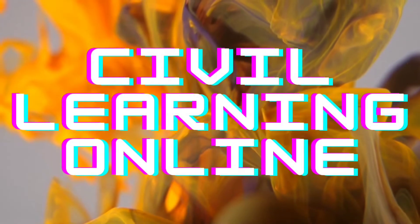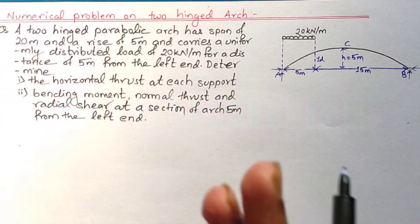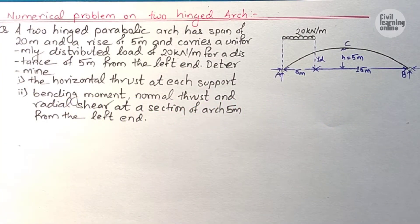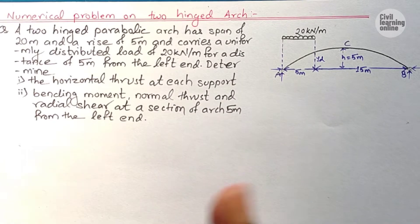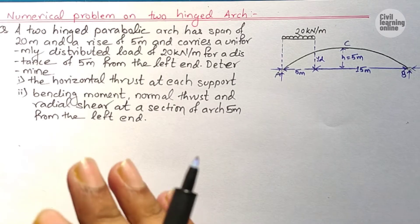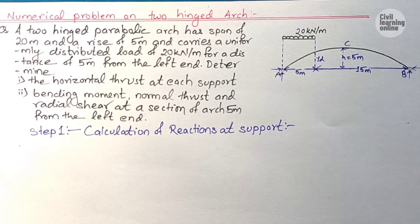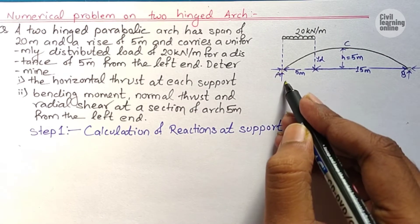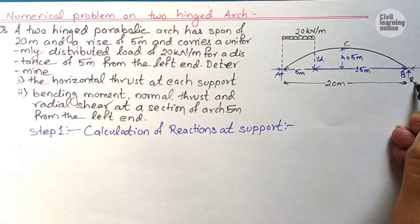Beginning the solution with Step 1 — calculating the reactions at the supports. This is straightforward, similar to what we do in structural analysis while calculating shear force and bending moment diagrams for beams. Taking moment about A, let the reaction at support B be Rb and at support A be Ra, with horizontal reactions Ha and Hb.